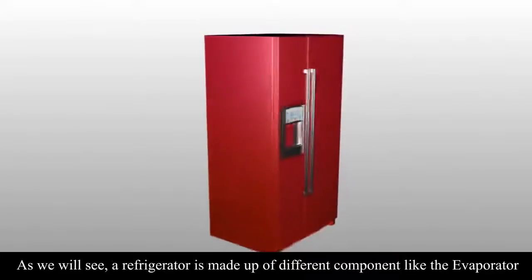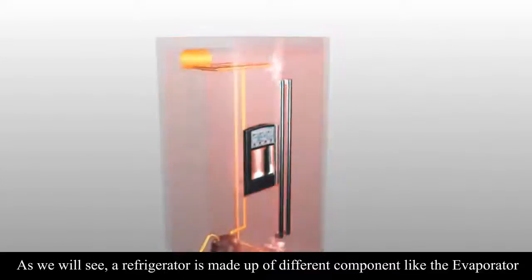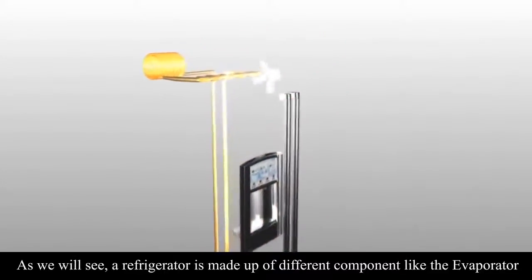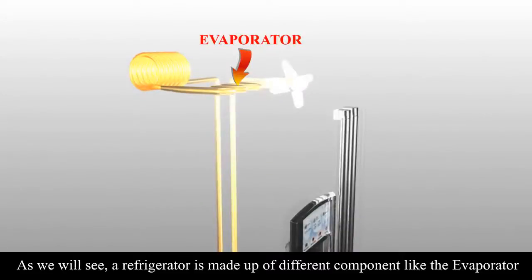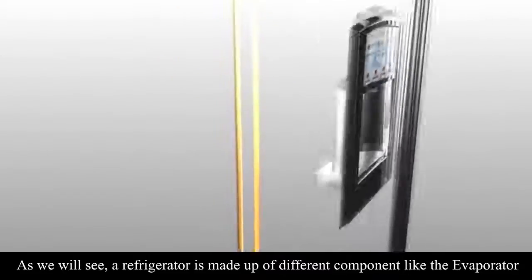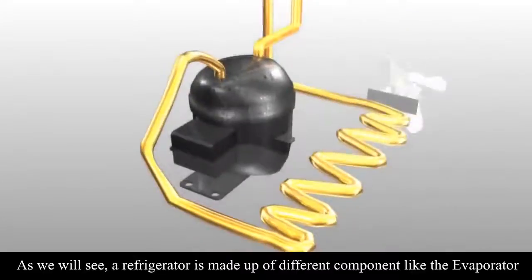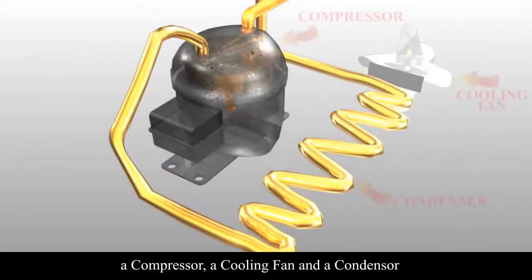As we will see, a refrigerator is made up of different components like the evaporator, a compressor, a cooling fan and a condenser.